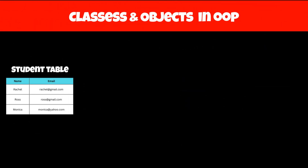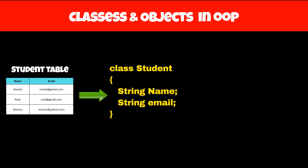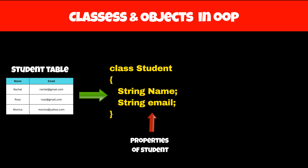We can consider these tables as similar to classes in OOP. Classes are also a representation of real-world entities, and properties of these real-world entities — such as name and email ID of a student — are added as variables in these classes.